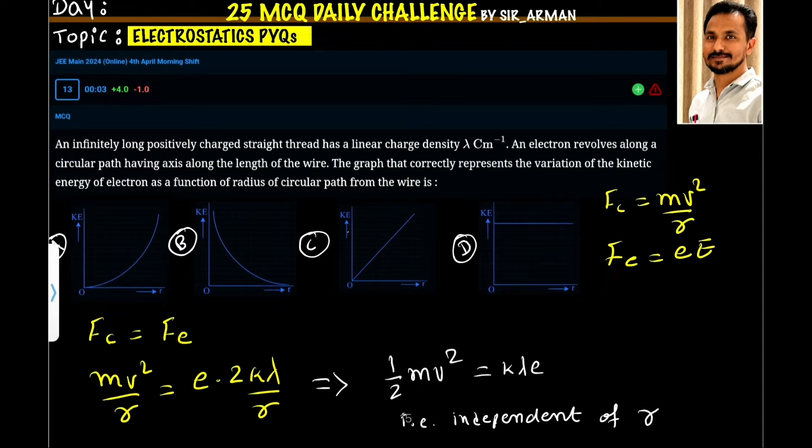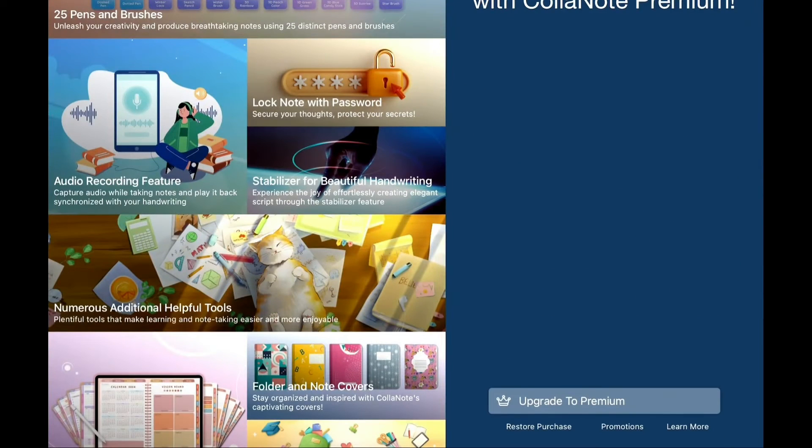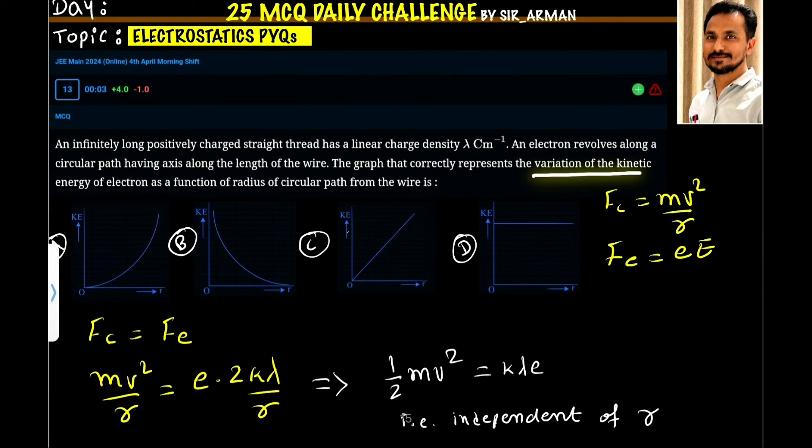An infinitely long positively charged straight thread has a linear charge density lambda coulomb per meter. An electron revolves along a circular path having axis along the length of the wire. The graph that correctly represents the variation of kinetic energy of electron as a function of radius of circular path from the wire is.